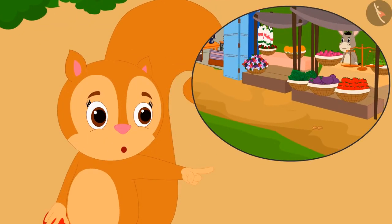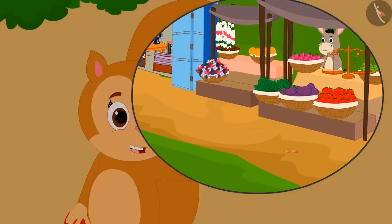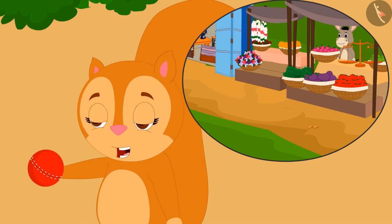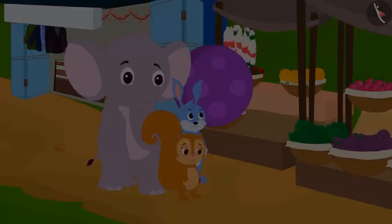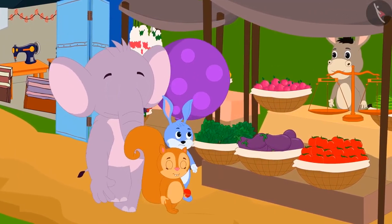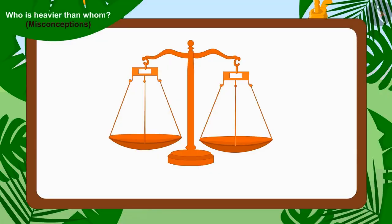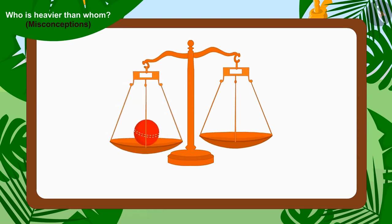After listening to Appu, Chanda said, 'Look, there is a weighing balance at Bhola's vegetable stall. Why don't we measure the weight of our toys with his balance?' The trio immediately reached Bhola's vegetable stall. There, Chanda placed her cricket ball in a plate of Bhola's scales and Appu's balloon on the other plate.